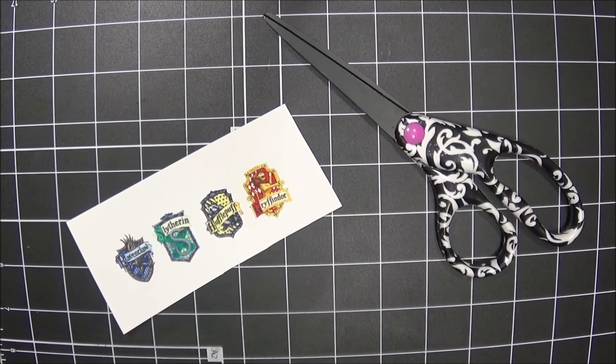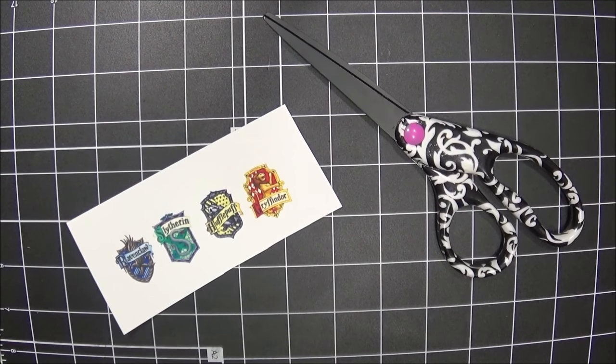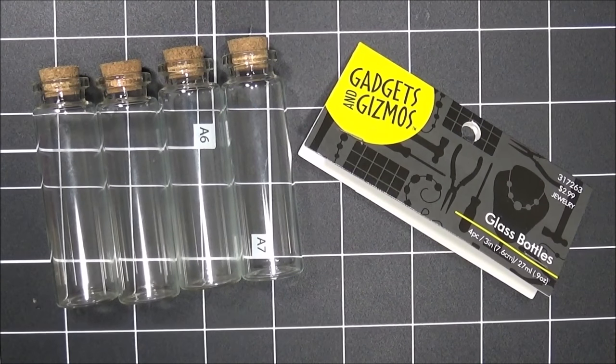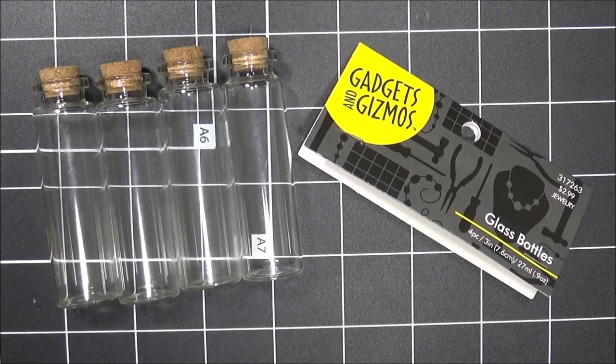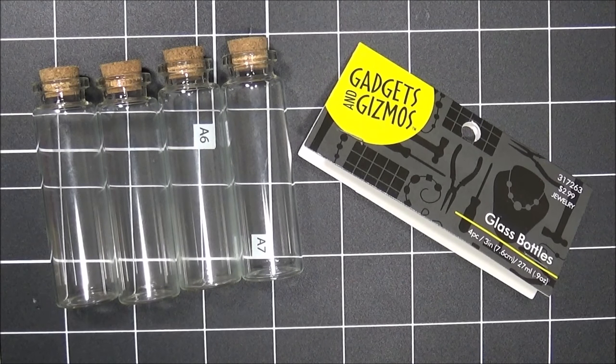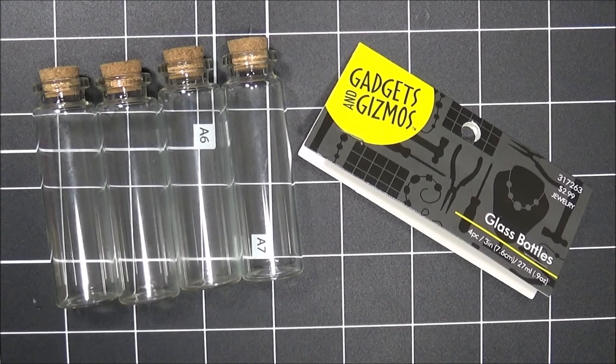First, I printed and cut out these Hogwarts house crests. I'll leave a link to the ones I used down below. Then I found these corked bottles at my local craft store. You can use hourglass bottles if you want to, or smaller bottles if you want to make this into a necklace or something.